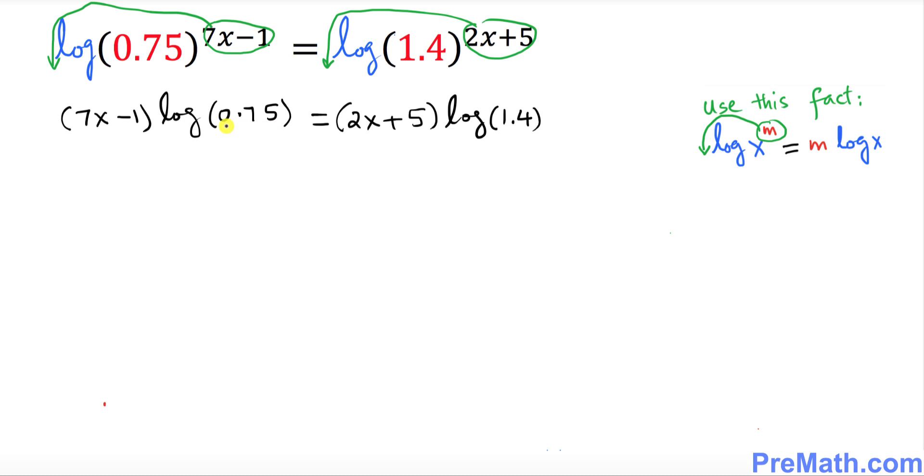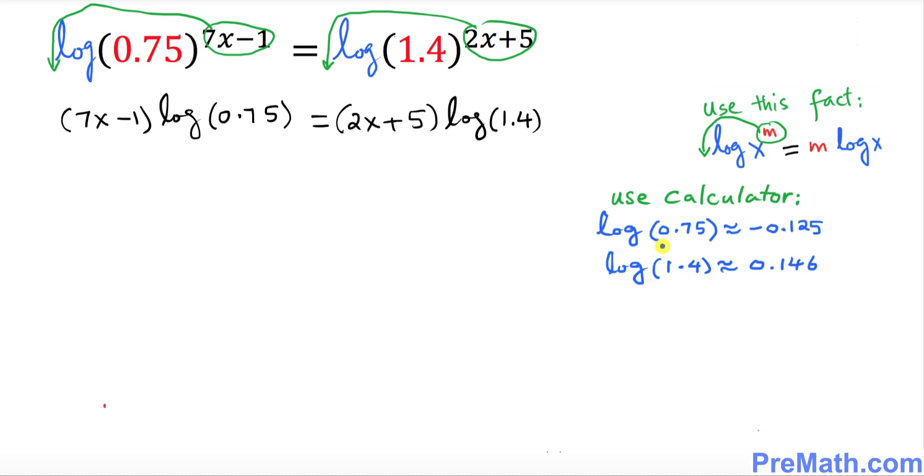Now we need to figure out the value of log of 0.75 and log of 1.4. And here are the values I have put down by using the calculator. Log of 0.75 is approximately equal to negative 0.125 and log of 1.4 is approximately equal to 0.146.